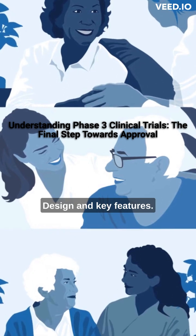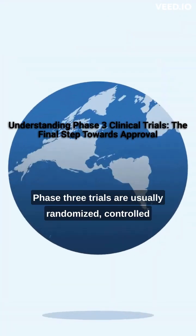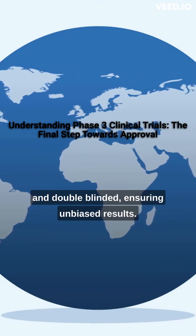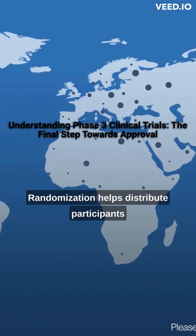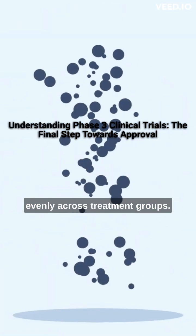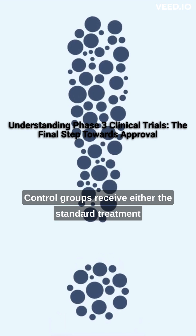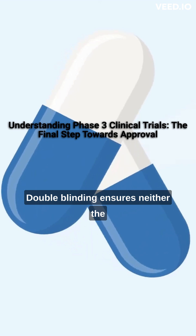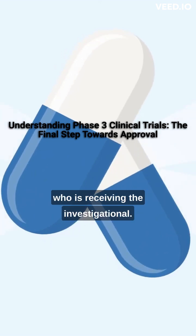Design and key features: Phase 3 trials are usually randomized, controlled, and double-blinded, ensuring unbiased results. Randomization helps distribute participants evenly across treatment groups. Control groups receive either the standard treatment or a placebo, allowing for comparison. Double-blinding ensures neither the participants nor the researchers know who is receiving the investigational drug.